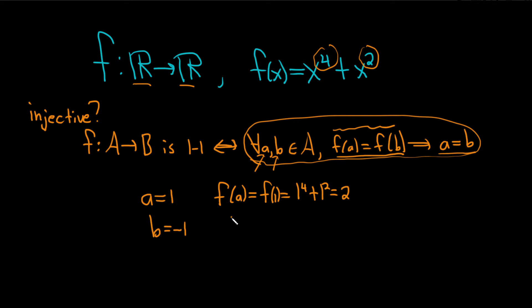At the same time, if you do f of b, that's equal to f of negative 1, which is negative 1 to the 4th plus negative 1 squared.